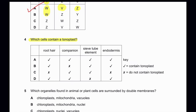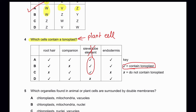Question 4: Which cells contain a tonoplast? Plant cells contain tonoplasts. However, phloem sieve tube elements do not have tonoplasts. Since all three other options include phloem sieve tube element as having a tonoplast, the answer is definitely D. Root hair cells, companion cells, and endodermal cells all have tonoplasts. Tonoplast is responsible for producing the plant's permanent vacuole, and phloem sieve tube elements do not have a permanent vacuole. So D is the correct answer.